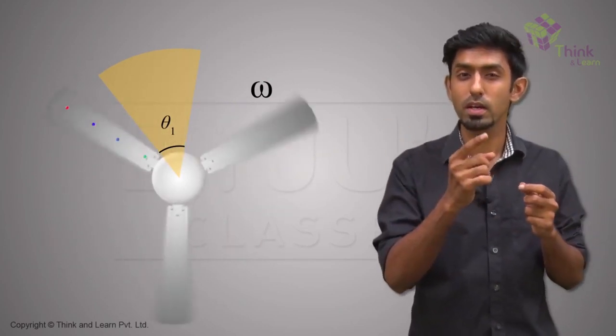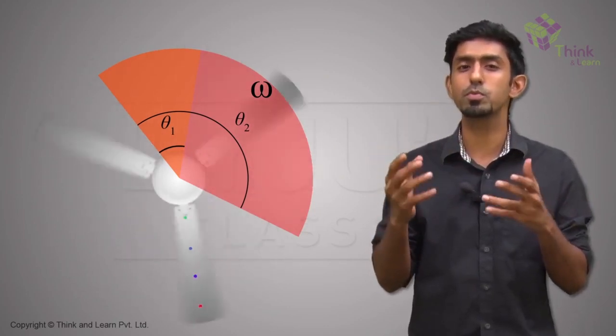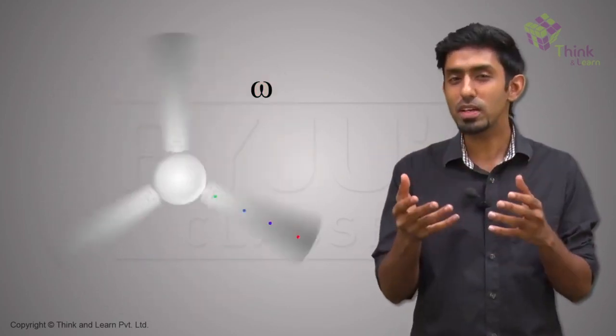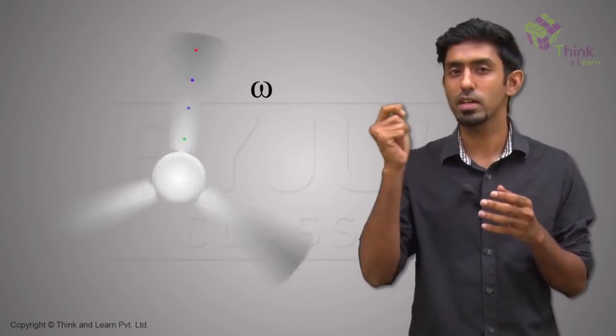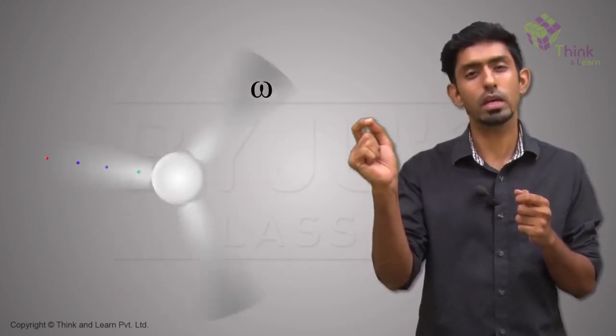And as time goes, the fan starts going faster, which means it has a larger omega. Eventually, the fan will reach its final velocity, and after that it will not increase its speed.